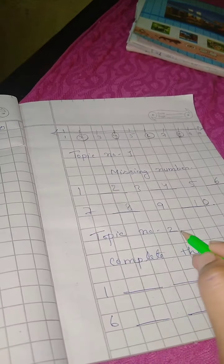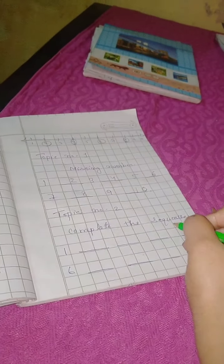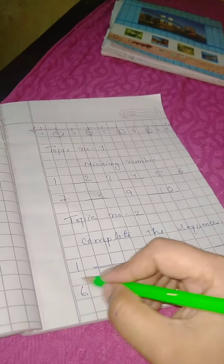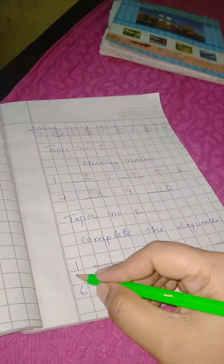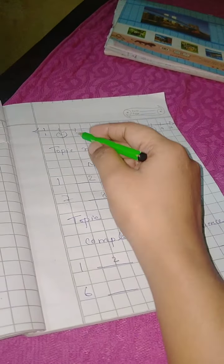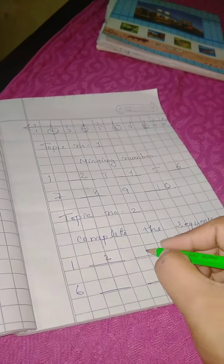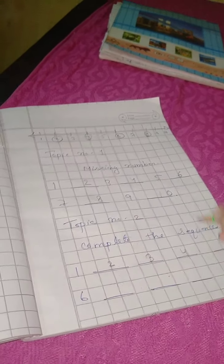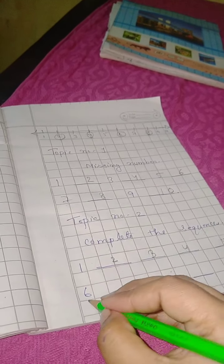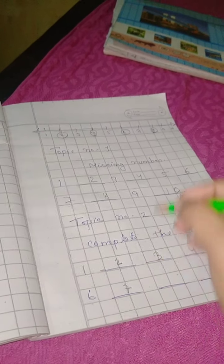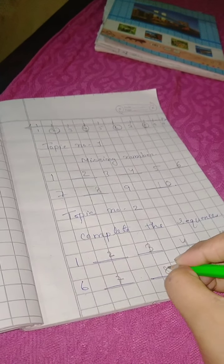Our second topic is complete the sequence. Sequence means that we will write in a line. We will write 2 just after 1, then 3, then 4, then 5, then 6, then 7, then 8, then 9, then 10.